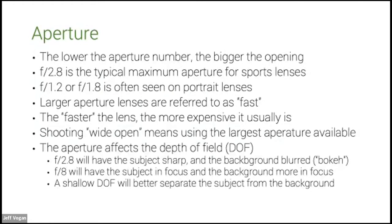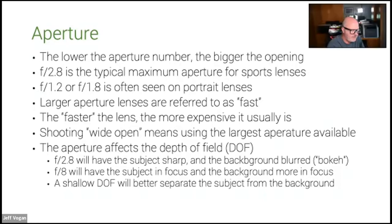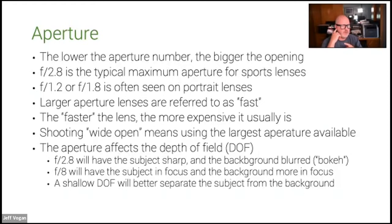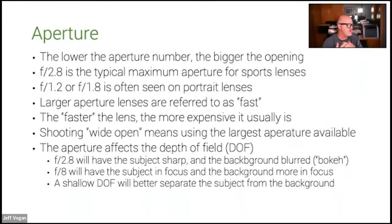The aperture affects what's called depth of field — basically how deep the area that is in focus is. With a very shallow depth of field, in a portrait the eye will be sharp but the ear will be out of focus. If you're taking a group shot with two rows of people, you'll want a larger aperture number like F8, because that gives a bigger depth of field so both rows are in focus.